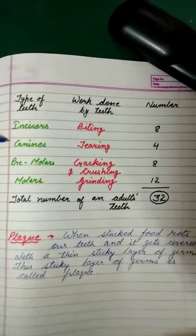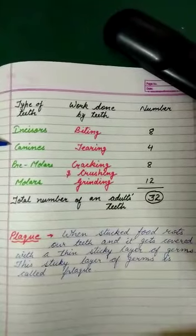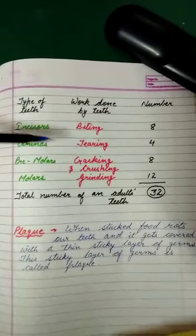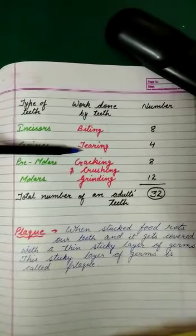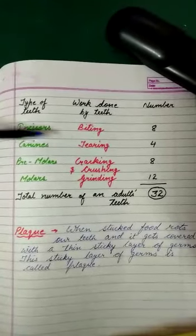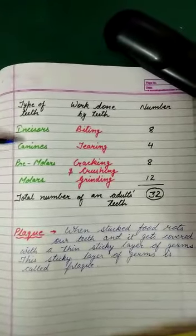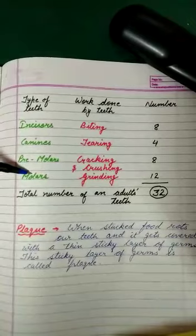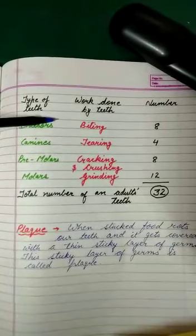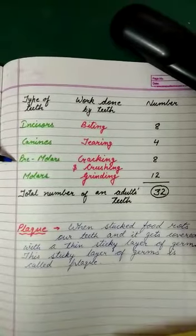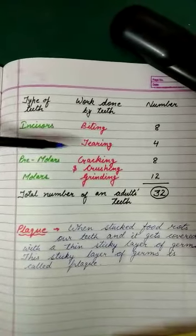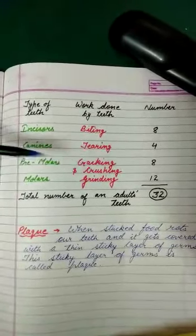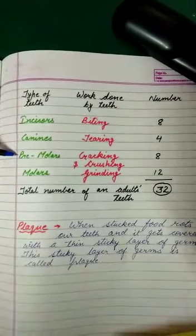Next is the canine. These are the sharp, pointed teeth. If you have seen a dog or animal's teeth, canines are used for tearing flesh. So canines are used for tearing, and they are 4 in total: 2 upper and 2 lower.